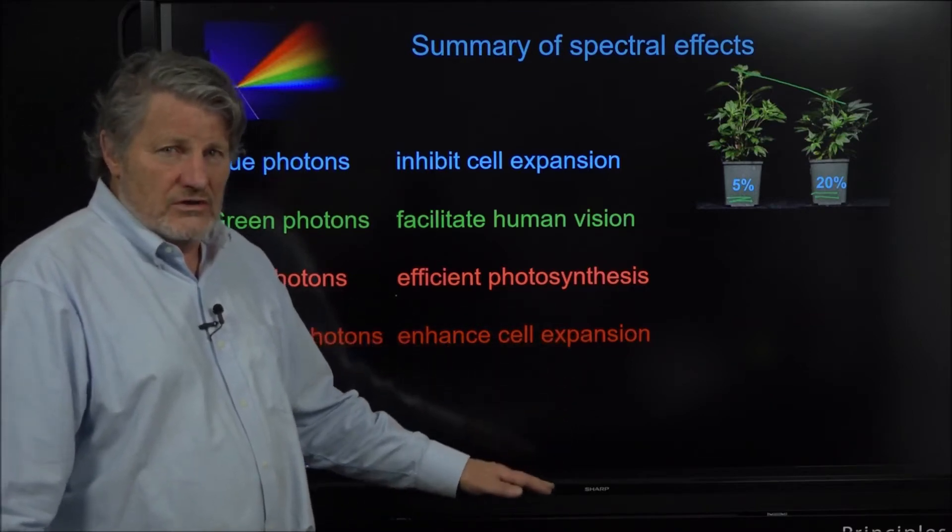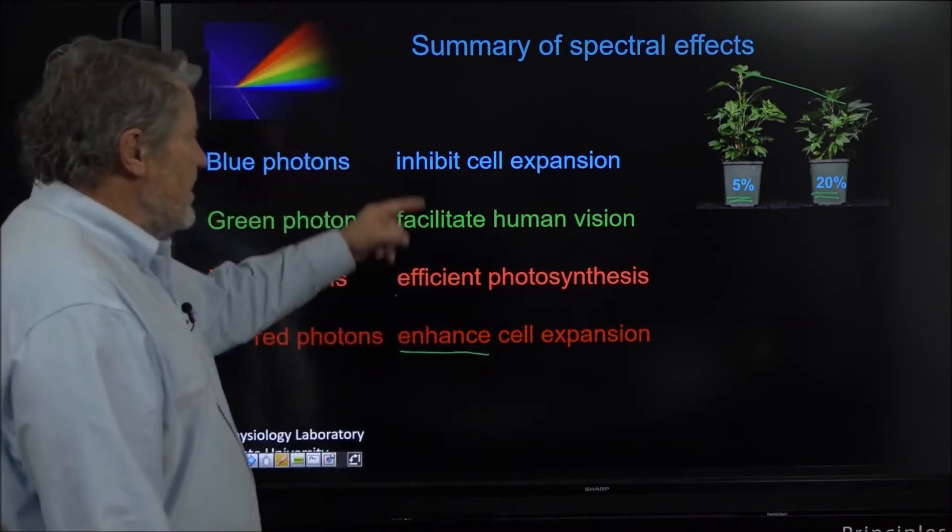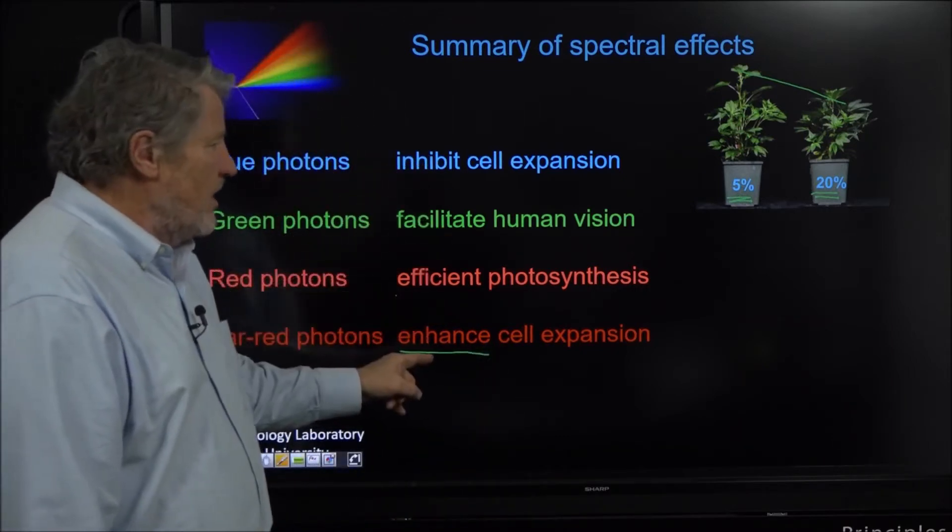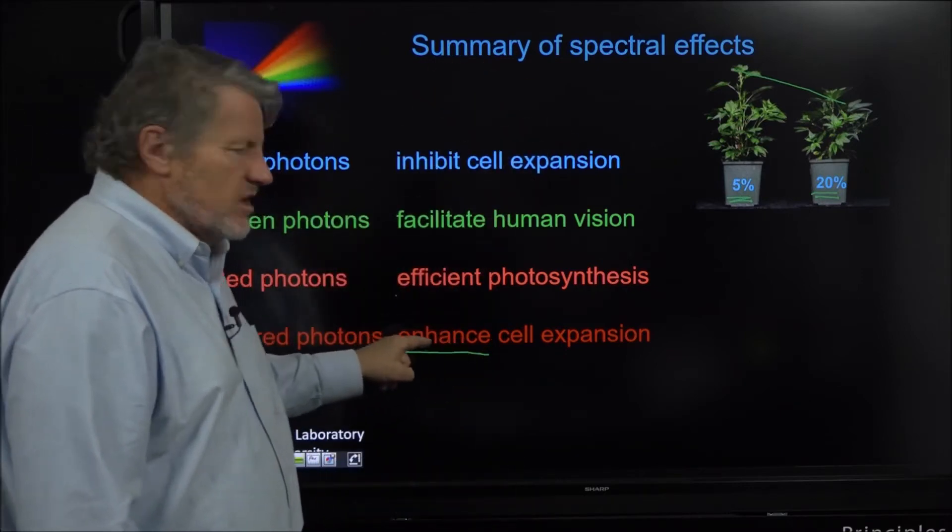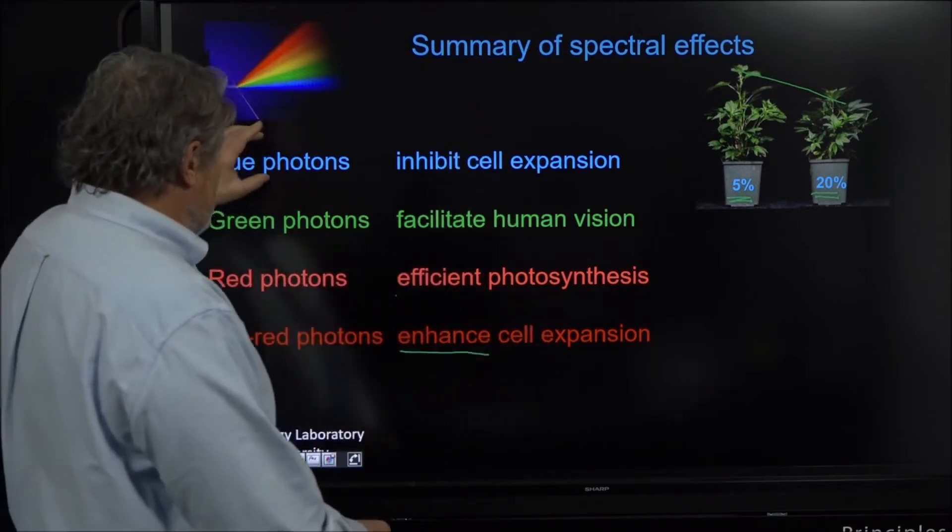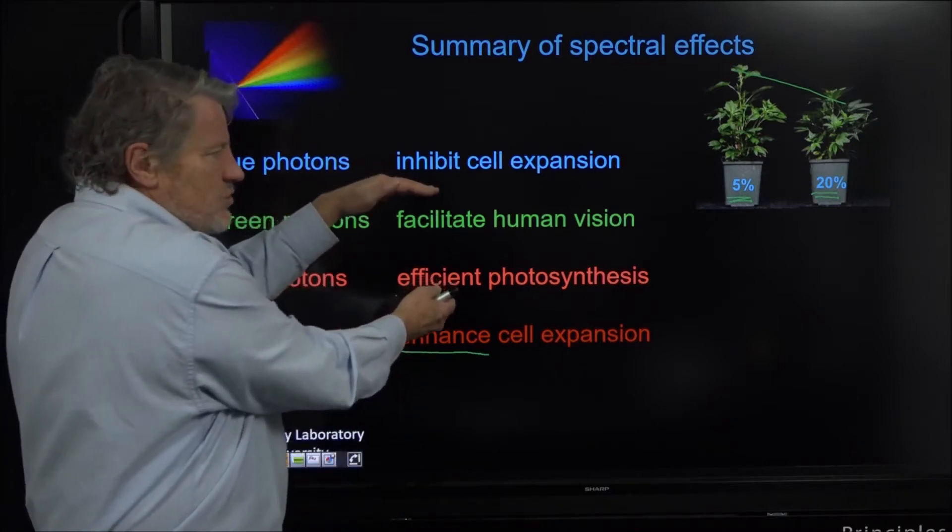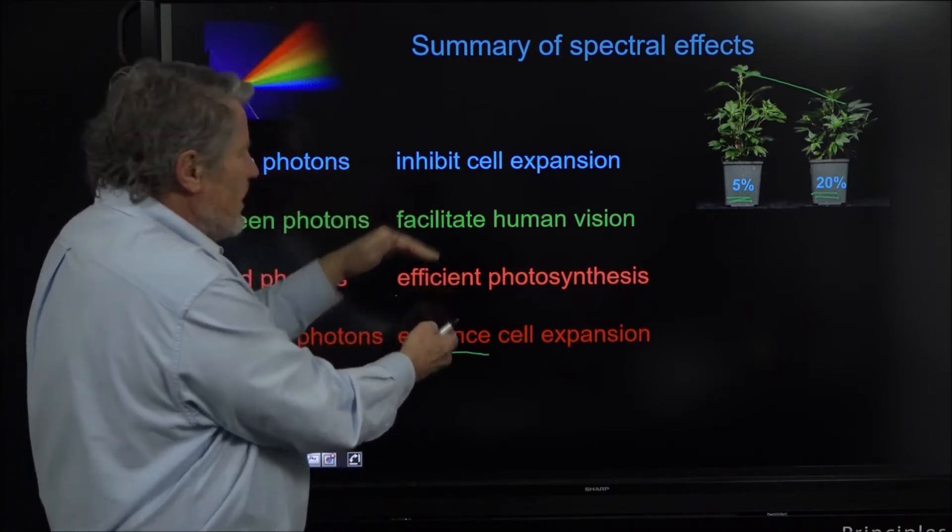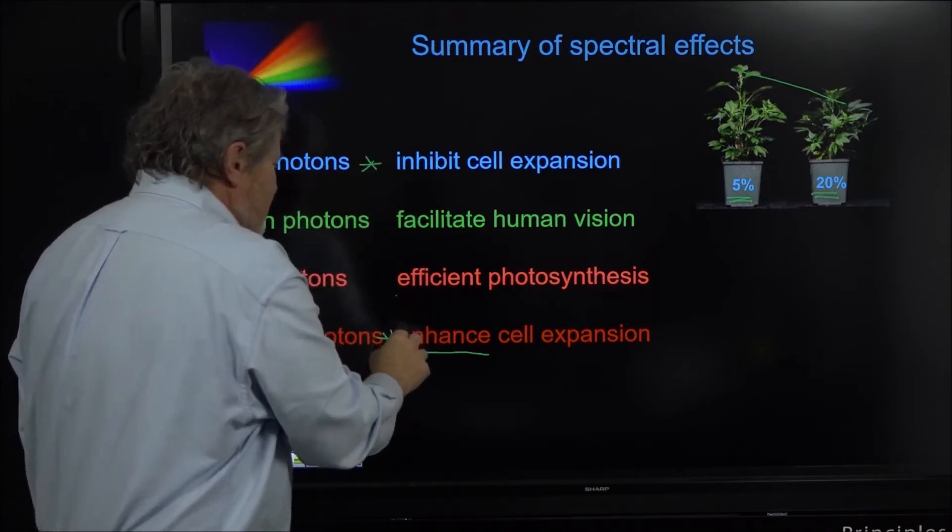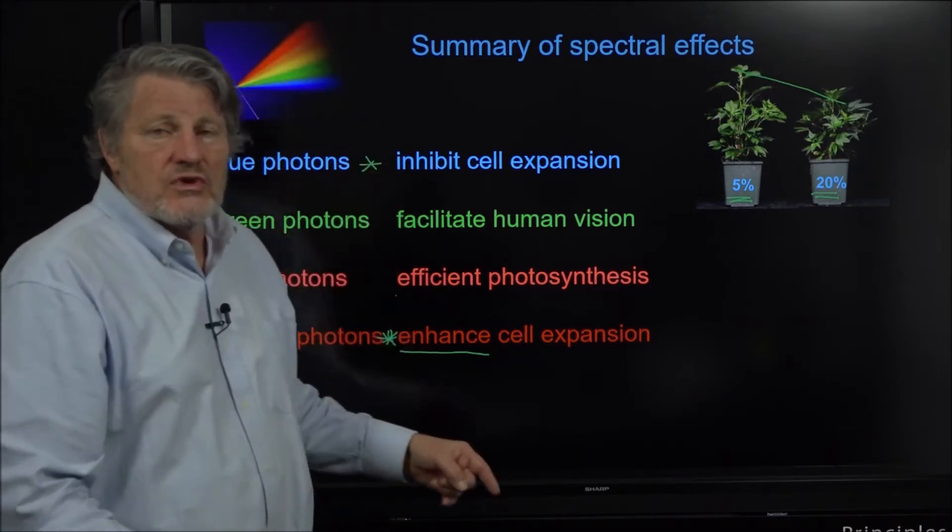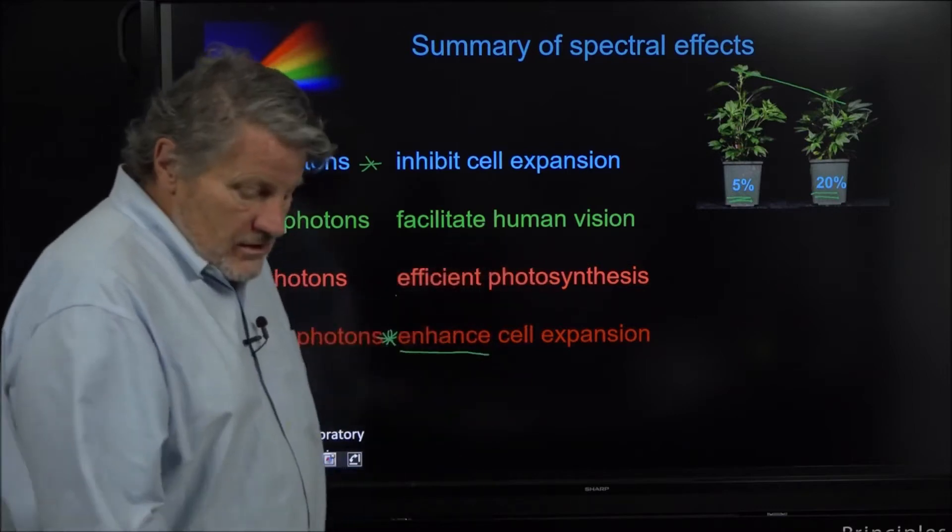And finally, new kid on the block, far red photons enhance cell division so they counteract the blue. In the same way that blue photons make them shorter we can bring in the far reds to make them tall again. So the middle categories here, green and red, are doing their job - they're the background light. The biologically active colors are blues and far reds because we can shrink and swell stems.